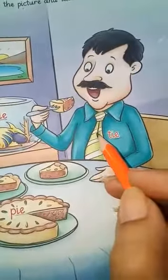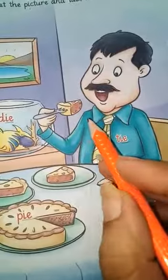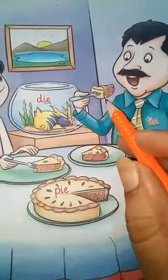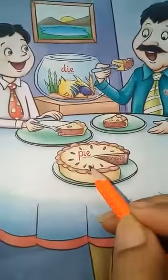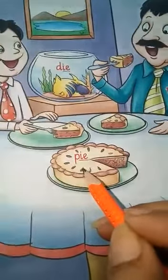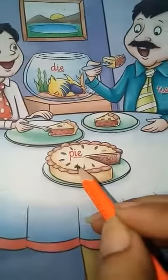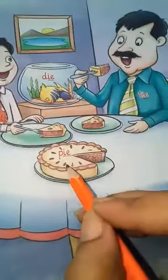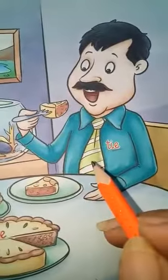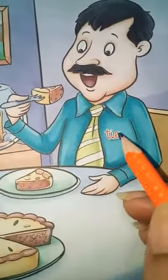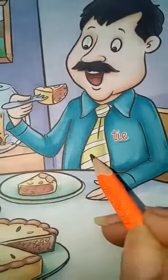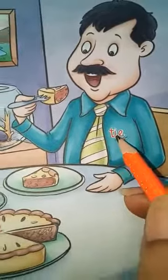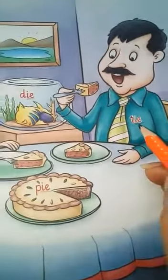And he is eating a pie. Repeat with me: pie. Look at this — what is this? This is a pie. Do you like to eat a pie? And what is he wearing? He is wearing a tie. T-I-E, tie.